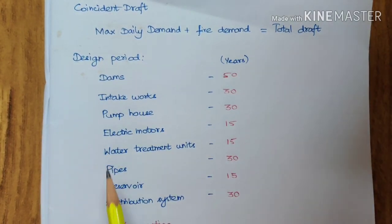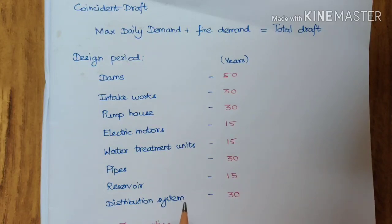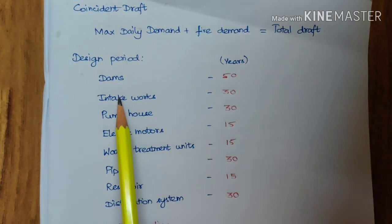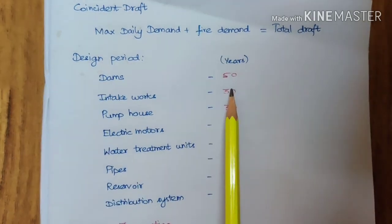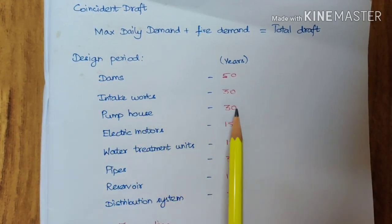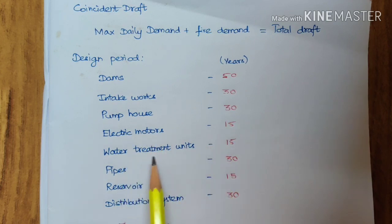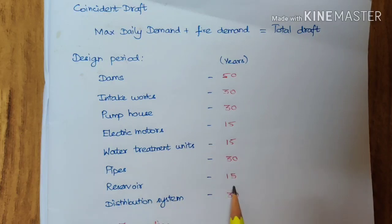The design period is very important for designing water supply structures such as treatment plants. After this time period, a structure loses its functional ability. The design periods are: dams — 50 years (maximum); intake works — 30 years; pump house — 30 years; electric motors — 15 years; water treatment units — 15 years; pipes — 30 years; reservoirs — 15 years; and distribution systems — 30 years.